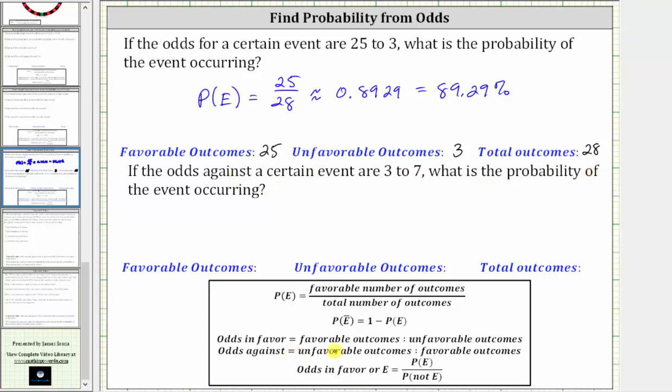Remember, the odds against an event are equal to the ratio of the number of unfavorable outcomes to the number of favorable outcomes.